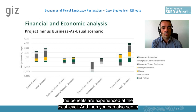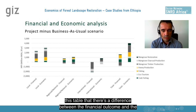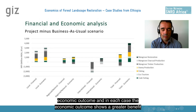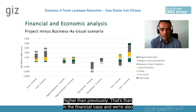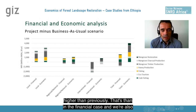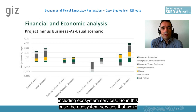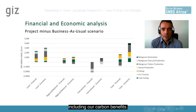You can also see in this table that there's a difference between the financial outcome and the economic outcome. In each case, the economic outcome shows a greater benefit because we're using a lower discount rate, so we value future values higher than in the financial case. We're also including ecosystem services — in this case, the ecosystem services we're including are carbon benefits.